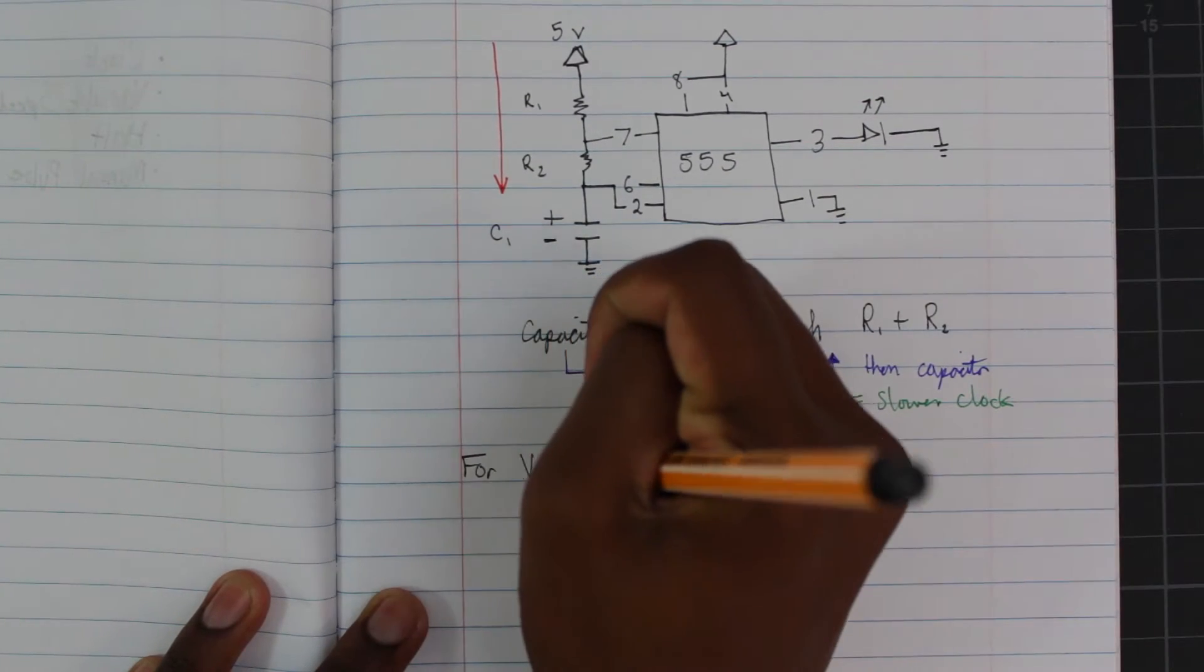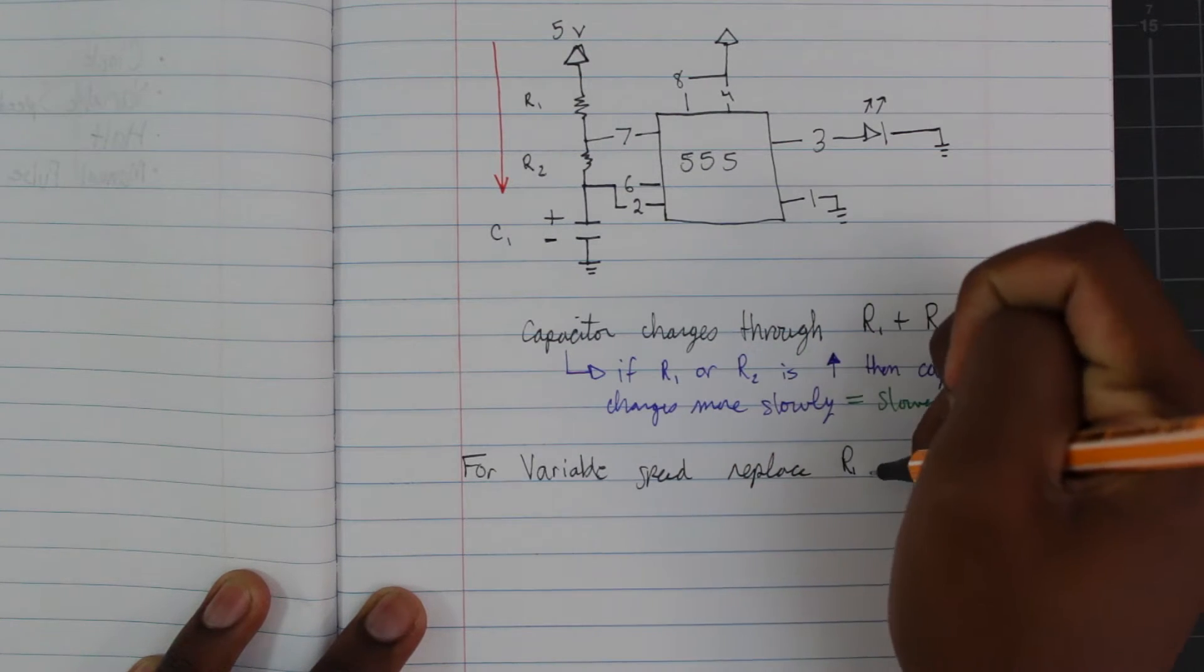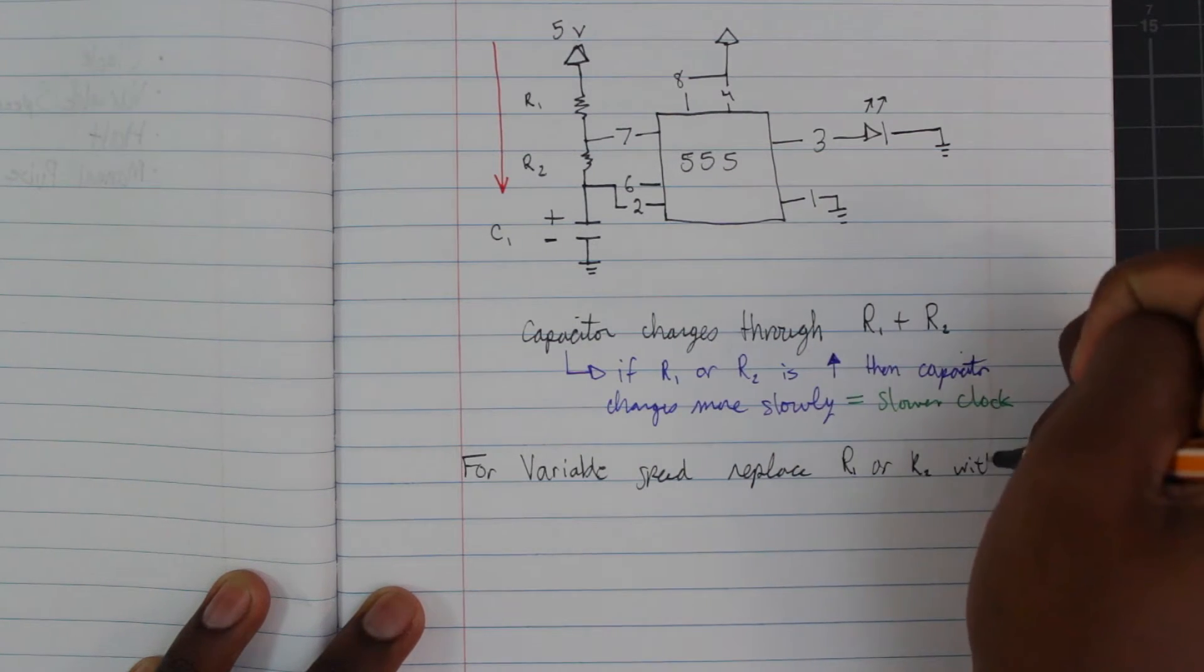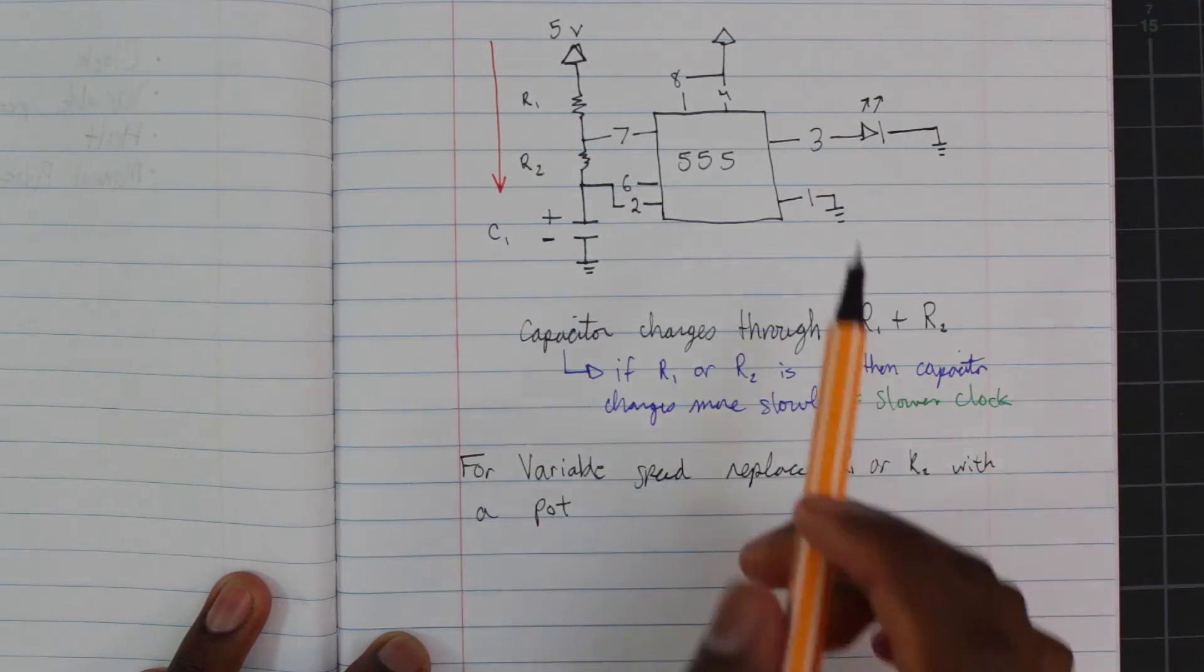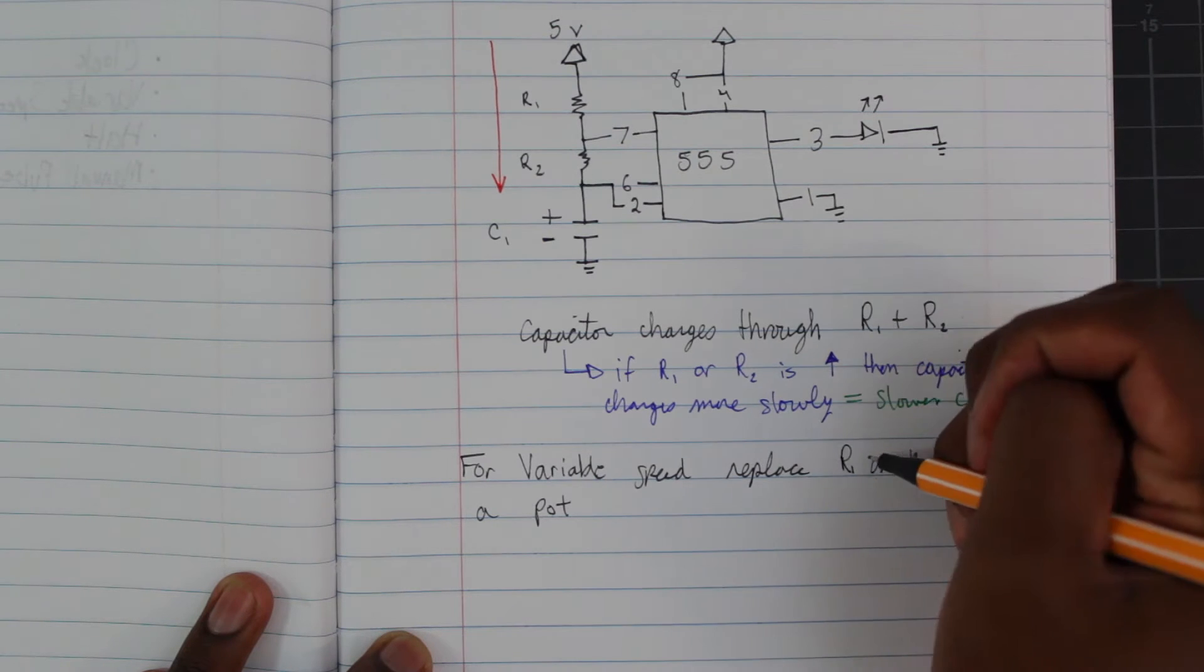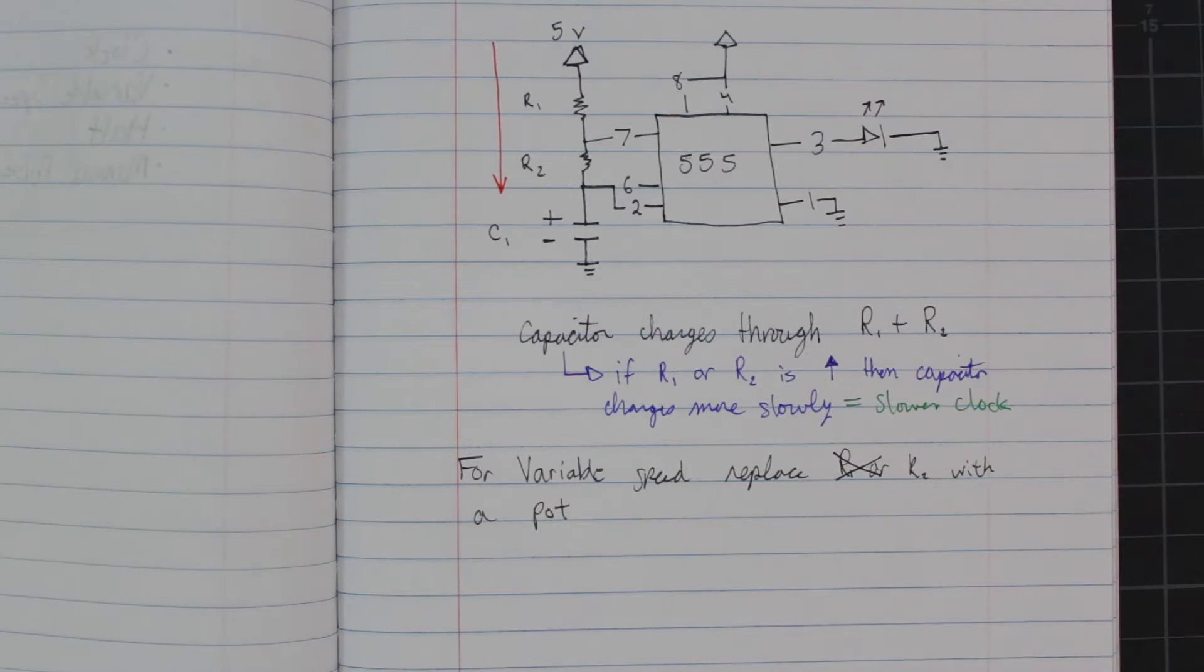So for a variable speed, we could change the resistor values. Now if we replace R1 or R2 with a potentiometer, then we can variably control the resistance and therefore the rate at which the capacitor charges and therefore the rate at which the clock pulses. However, although the capacitor charges through R1 and R2, it only discharges through R2. So we will replace R2 with the pot.